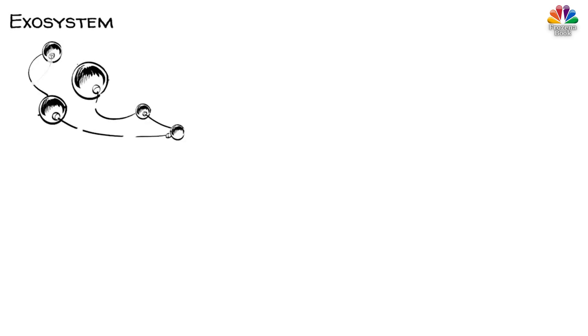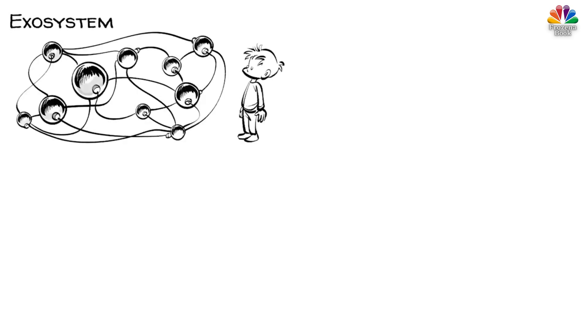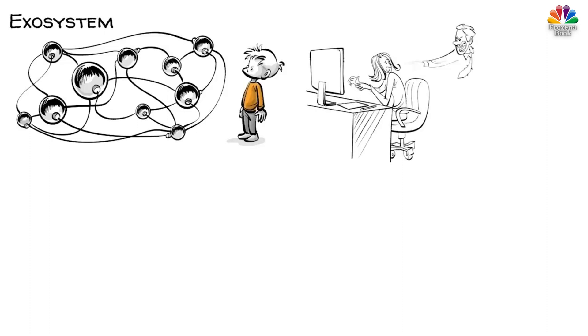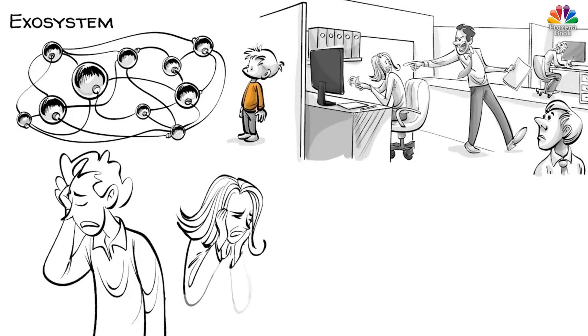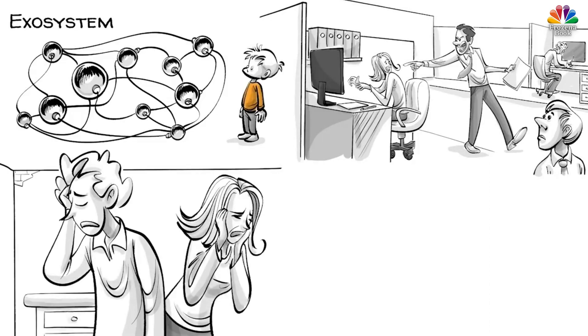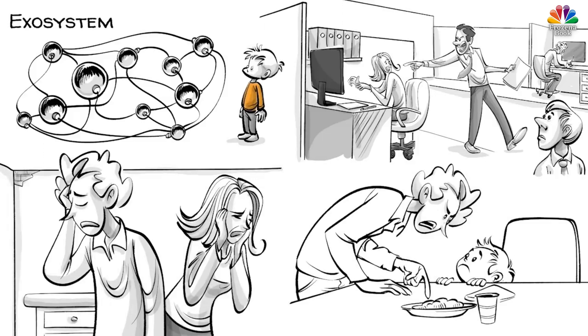The exosystem involves the links between social settings that do not involve the child. For example, a child's experience at home can be influenced by their parents' experiences at work. If the mother loses her job, there might be more arguments with the father resulting in changes in their interaction with the child.